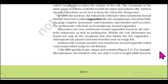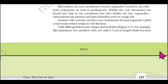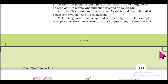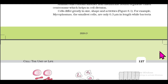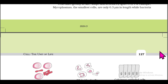Ribosomes are non-membrane-bound organelles found in all cells, both eukaryotic and prokaryotic. Within the cell, ribosomes are found not only in the cytoplasm but also within chloroplasts in plants and mitochondria, and on rough endoplasmic reticulum. Animal cells also contain another non-membrane-bound organelle called the centrosome, which helps in cell division.